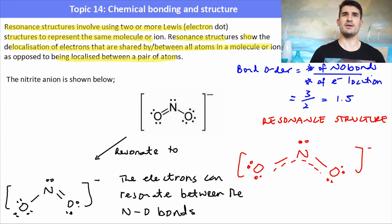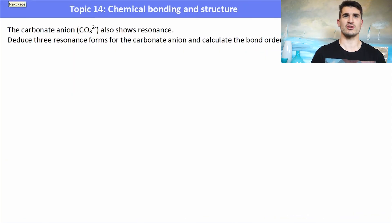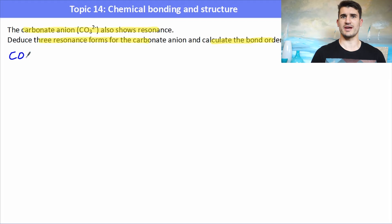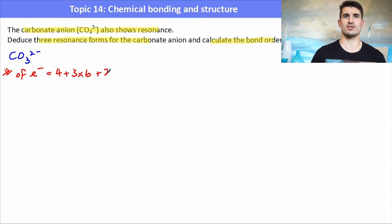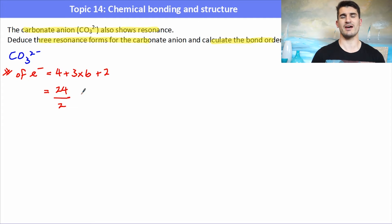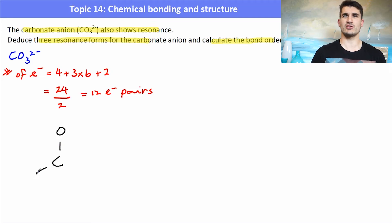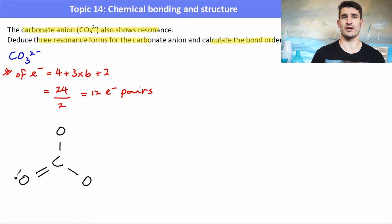The carbonate ion CO3²⁻ also shows a resonance structure, and it actually has three resonance structures. First, we need to work out what the carbonate ion actually looks like. We can work out the number of electrons in the ion: carbon has four, three oxygens contribute three times six, and the two-minus charge gives us two extra electrons, giving 24 electrons in total. Dividing by two gives us 12 pairs of electrons. We arrange those electrons around the carbon with three oxygens — carbon will be in a triangular planar arrangement and needs four bonds, so it will have a double bond between one of the oxygens and the carbon.